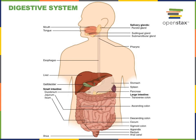The large intestine functions to absorb most of the remaining water from the contents it receives from the small intestine, and also absorbs some nutrients, especially electrolytes like sodium and potassium. It forms feces from the indigestible material, and those feces are removed from the large intestine in the process of defecation.